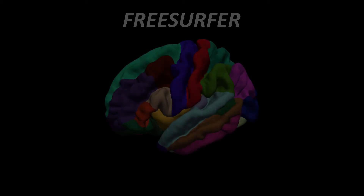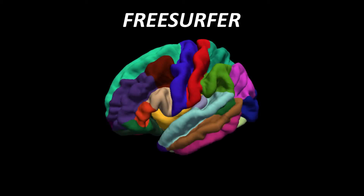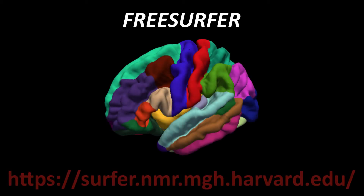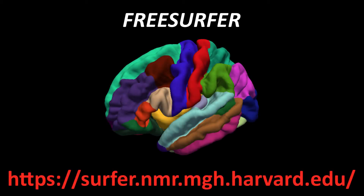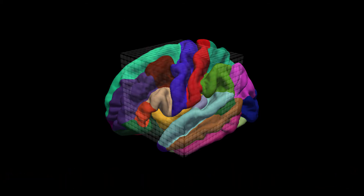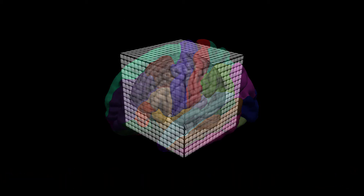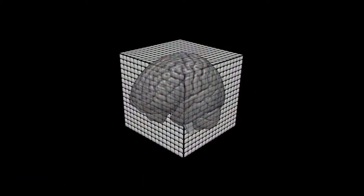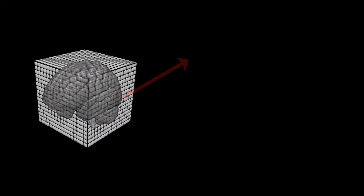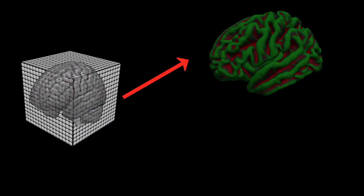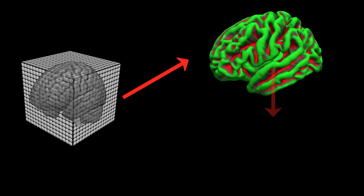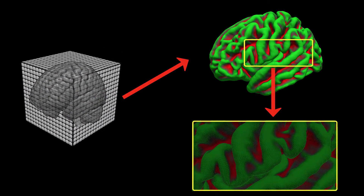To address these problems, we're going to use FreeSurfer, a program that reconstructs the cortical surface from a three-dimensional volume. The reconstruction process converts the volume from 3D voxels to 2D triangles.